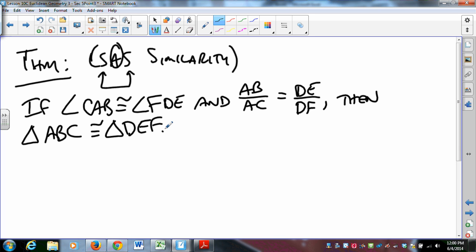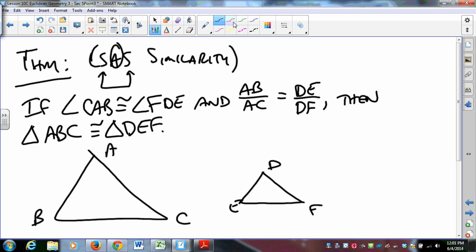That actually holds in Euclidean geometry. It is the kind of thing that I would like to prove when we get to class. One thing to consider on that, but okay, so let's make sure we've got this right. We've got triangle ABC, and we have triangle DEF, and this angle is congruent to this one, and the ratio of these sides is the same as the ratio of those sides.